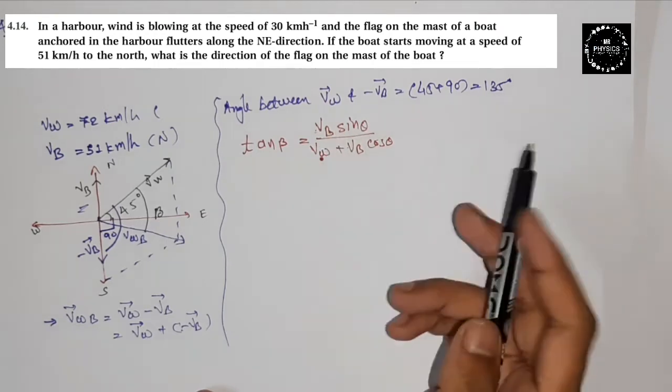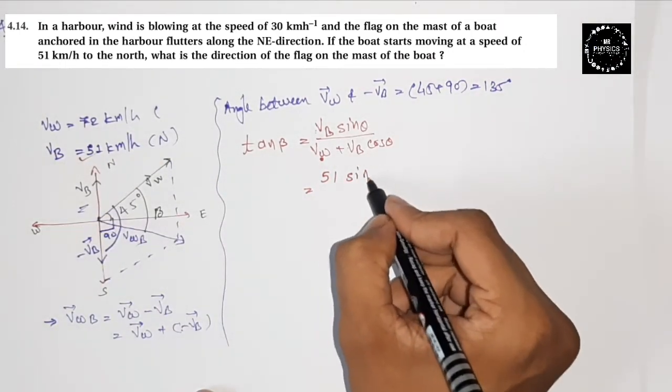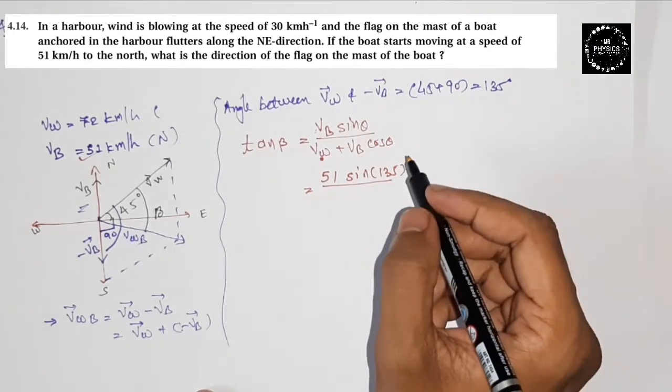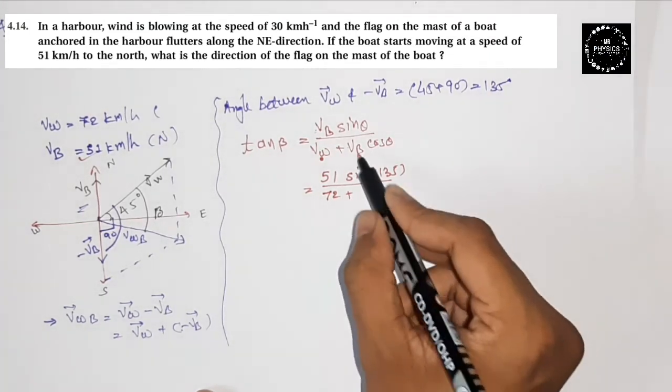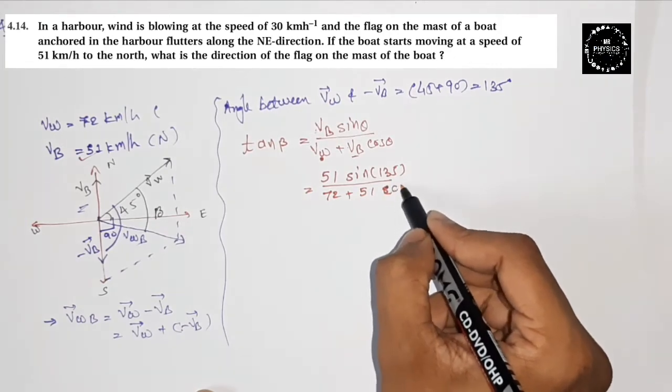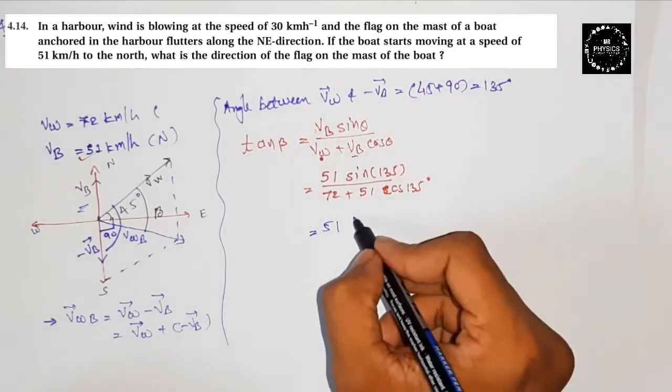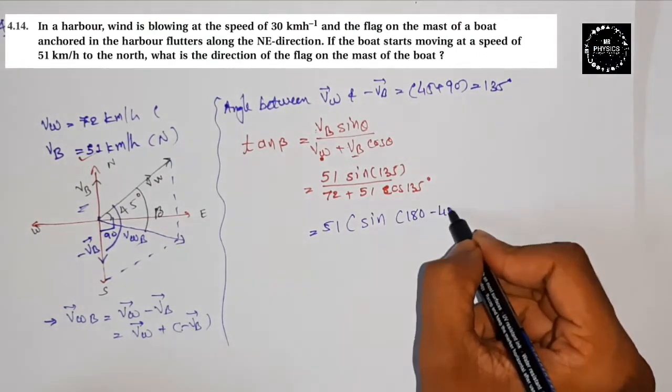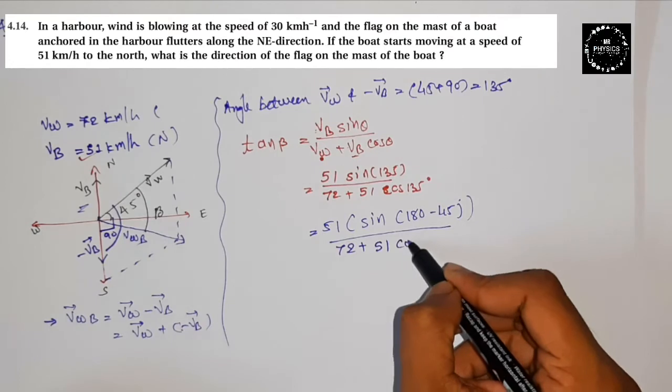V_b is 51, sine 135. And then V_w which is 72 minus V_b, 51, and cos 135. Let's see, cos 135. Let me define cos 135. I'll do 180 minus 45. So 51 sine 180 minus 45, so 135, then 72 plus 51 cos 180 minus 45.